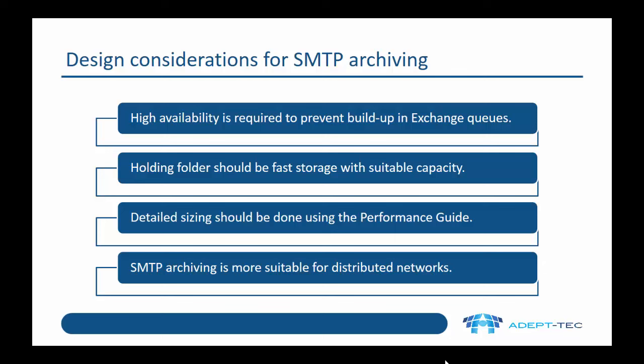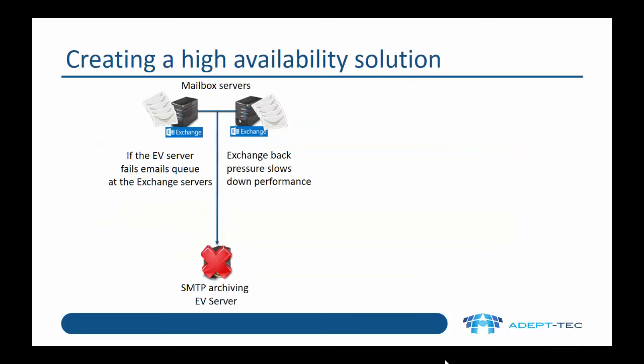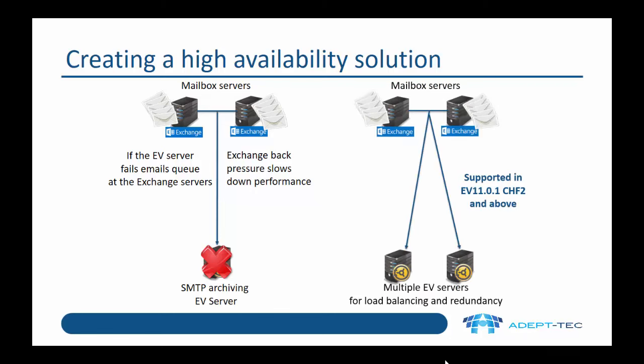SMTP archiving is suitable for most distributed networks because the architecture doesn't actually require connecting via MAPI. If we have a single enterprise vault server and the EV server fails, emails are going to queue at the exchange mailbox servers, causing back pressure and slowing down performance. So we need to consider having a high availability environment with multiple enterprise vault servers for load balancing and redundancy, supported in enterprise vault 1101, Cumulative hotfix 2 and above.